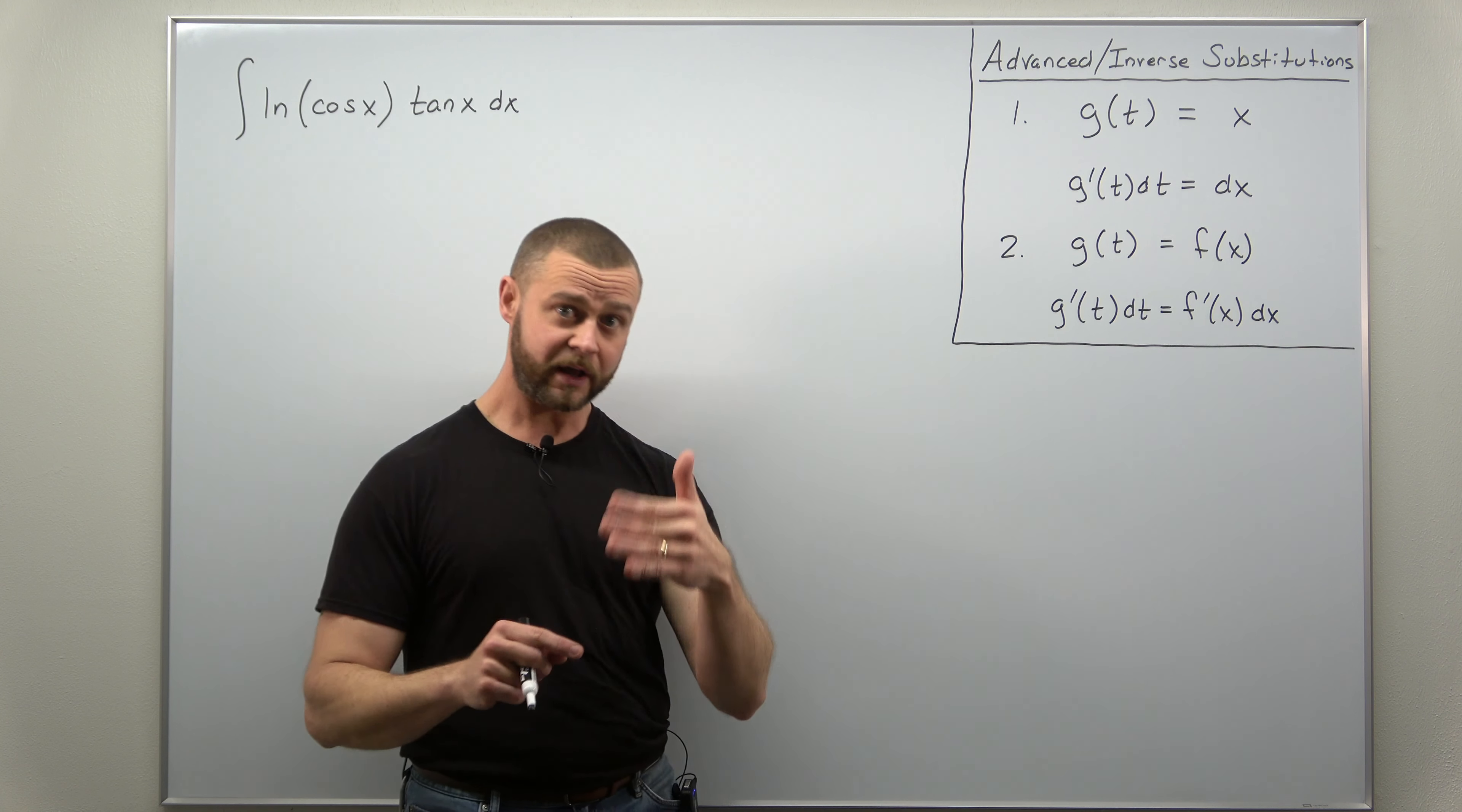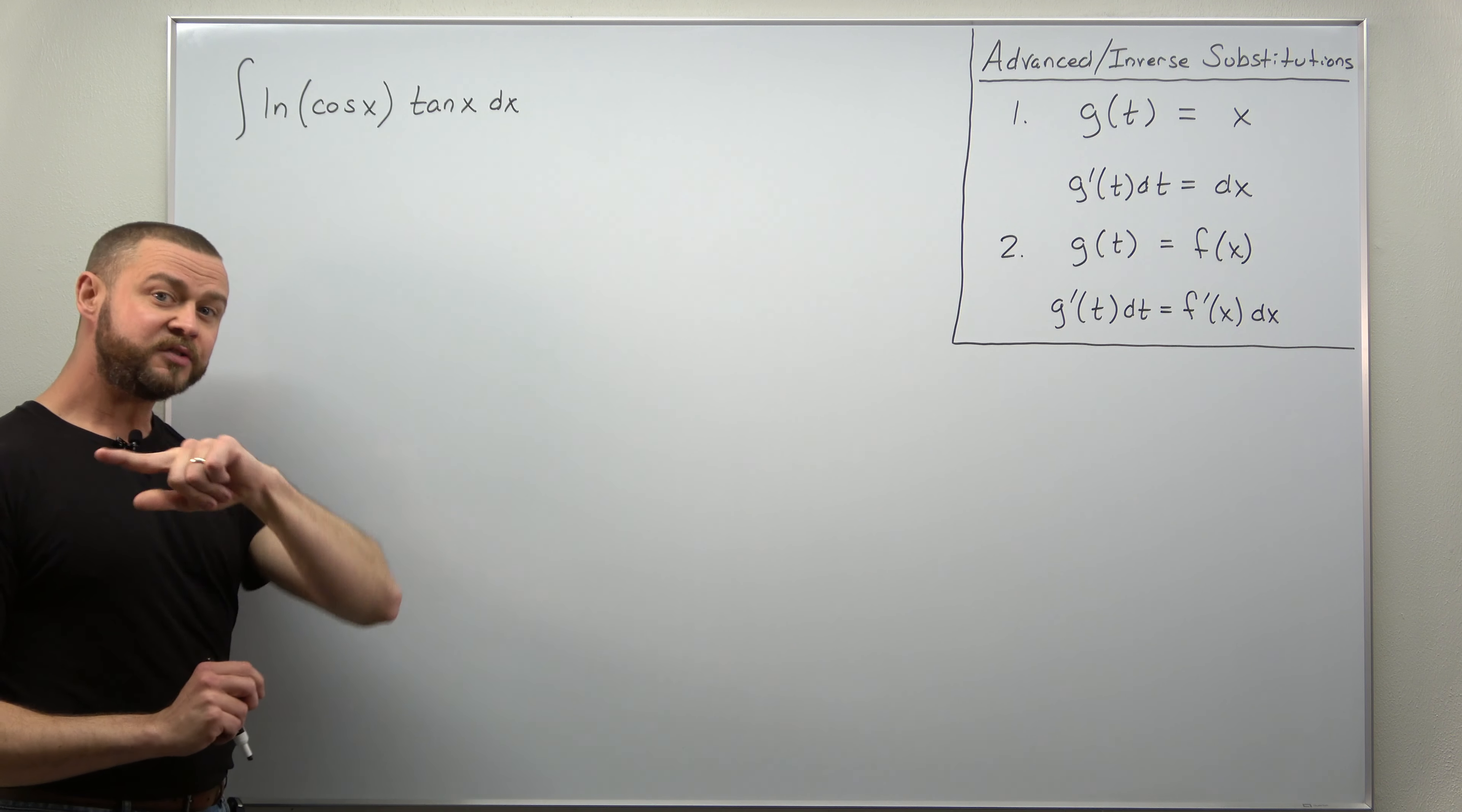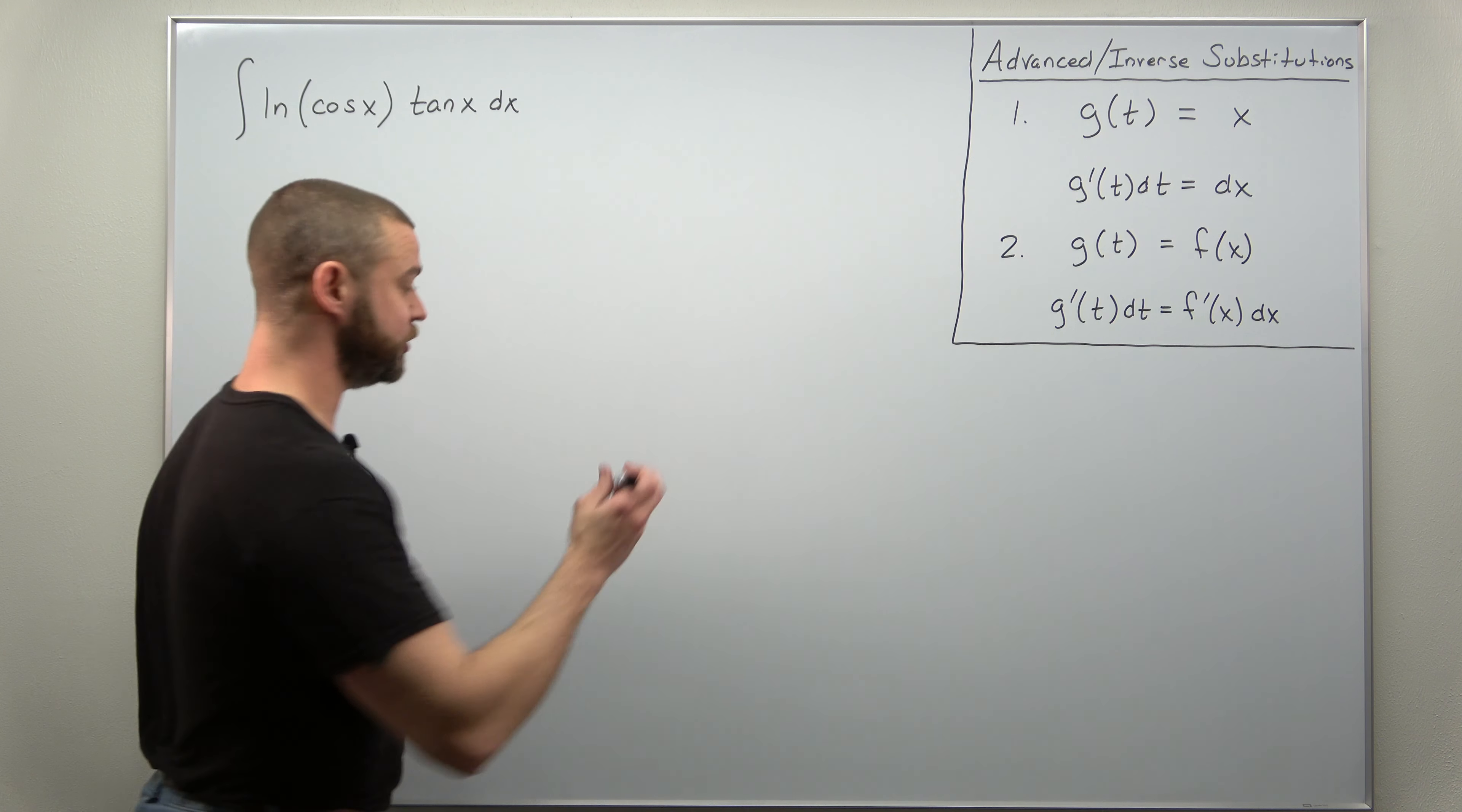Now let's take a look again at why this integral is difficult. The natural log term. If we had as the inside to the natural log function an exponential function, logs and exponentials cancel. So let's try for our inside here: let's try cosine of x equals e to the t and that will be our advanced substitution.